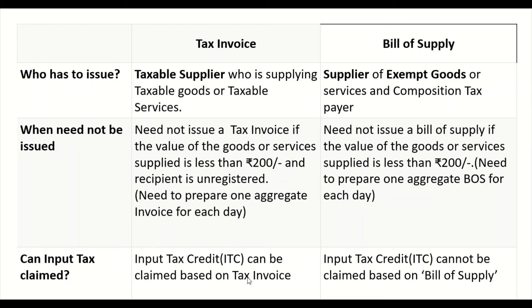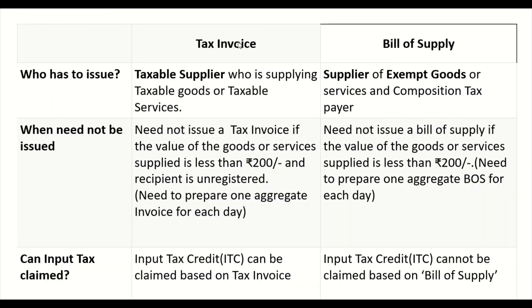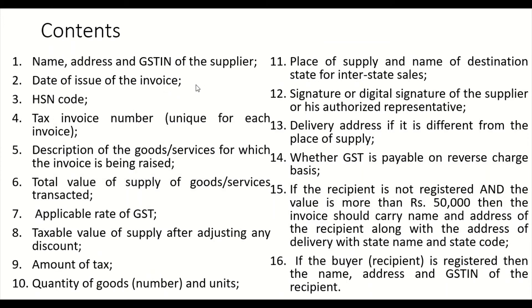Input tax credit can be claimed on tax invoices, but ITC cannot be claimed on a bill of supply — because the issuer is either supplying exempt goods, is a composition dealer, or is an unregistered person. This is the key difference between tax invoice and bill of supply, and this can be asked for 5 marks in the examination.